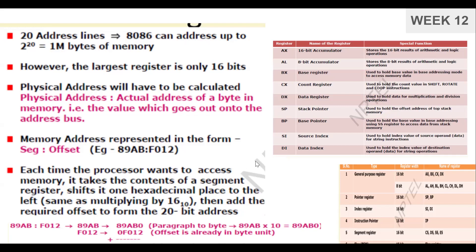In this 12th week we are mainly focusing on 8086. 8086 is a 16-bit microprocessor. The first 4 weeks we covered 8085, an 8-bit microprocessor; weeks 5 to 8 covered 8051, an 8-bit microcontroller; and the 12th week covers 8086, a 16-bit microprocessor. The data bus length is 16 bits and the address line is 20 bits, giving 2 to the power of 20, that is 1 megabyte.